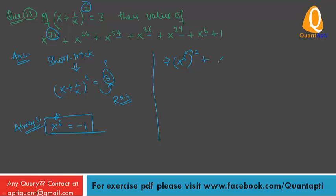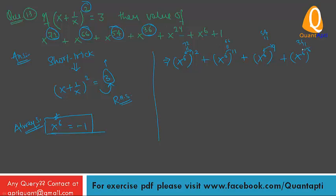Plus x raised to power 66, which we can break as x raised to power 6 to the power 11, because 11 into 6 is 66. Then x raised to power 54 is x raised to power 6 to the power 9, since 9 into 6 is 54. Then x raised to power 36 is x raised to power 6 to the power 6, and x raised to power 24 is x raised to power 6 to the power 4, since 6 into 4 is 24. Plus 1 as a constant term.